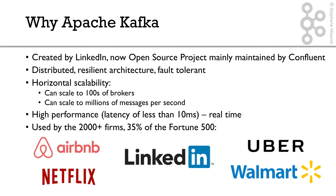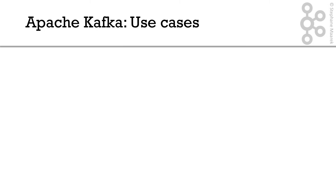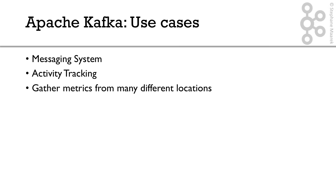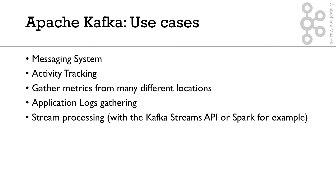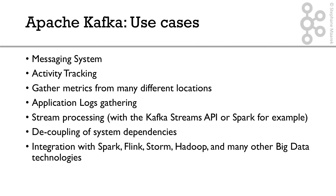Everyone uses Kafka or is thinking about using Kafka. Use cases for Apache Kafka include: a messaging system, activity tracking, gathering metrics from many different locations such as IoT devices, gathering logs from your applications, stream processing using the Kafka Streams API, decoupling of system dependencies to reduce load on your databases, and performing big data integrations with Spark, Flink, Storm, Hadoop, and other big data technologies. This is quite a wide array of use cases, which is why so many companies are using Apache Kafka as their backbone.